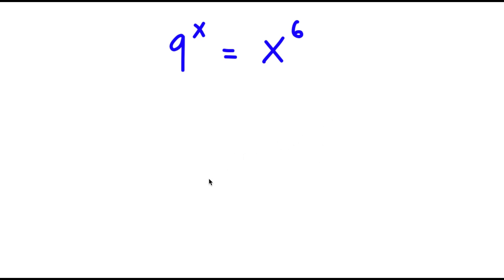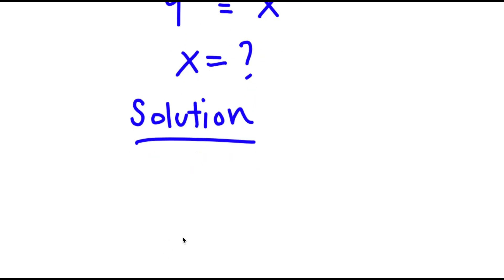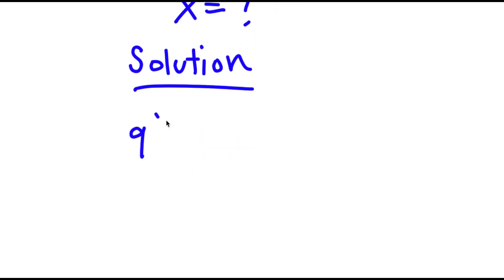In this problem, I have 9 to the power of x is equal to x to the power of 6, and I'm going to find the value of x. So for my solution, I start with 9 to the power of x is equal to x to the power of 6.